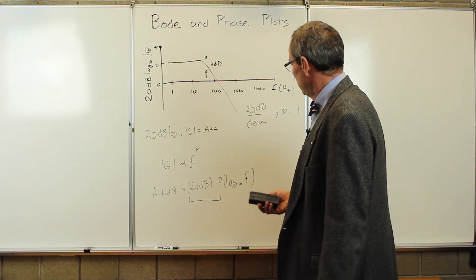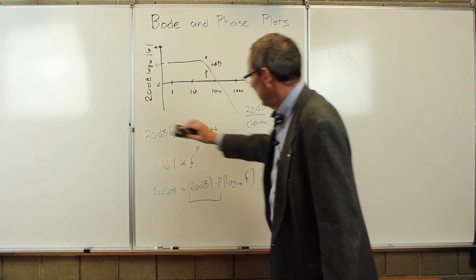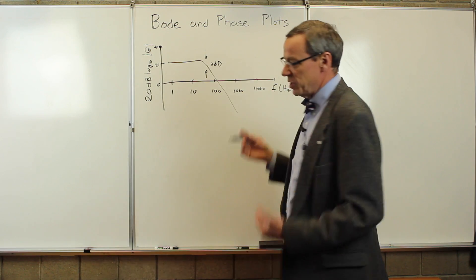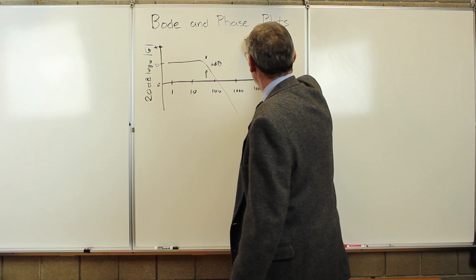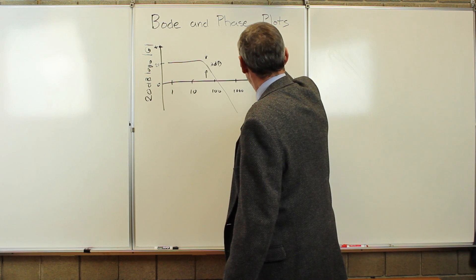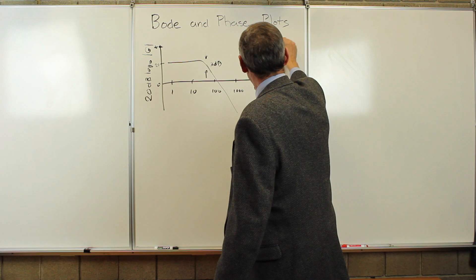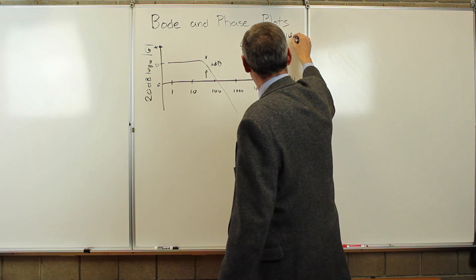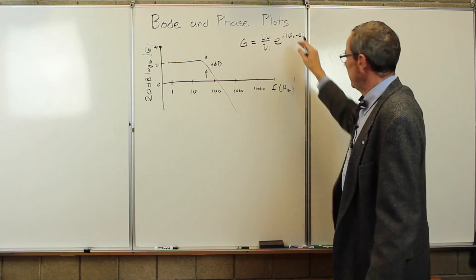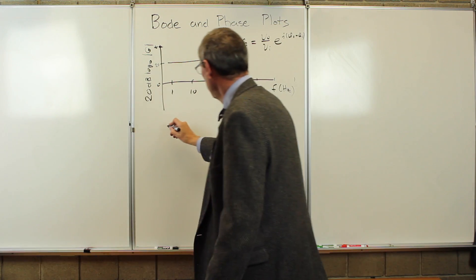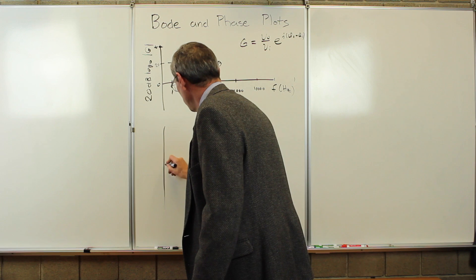The other plot that we have here is a phase plot. So let's take a look at that. We remember that when we took the ratio of v_out to v_in, we got a phase difference. We got the gain was v_out over v_in, e to the j, phi_out minus phi_in. So it would be interesting to plot what is that phase difference as well. And we do that on a very similar plot.